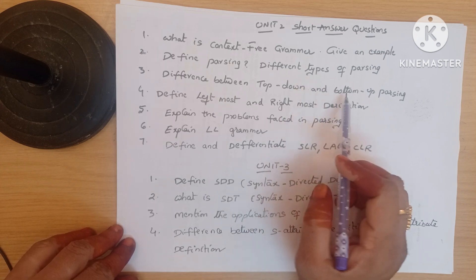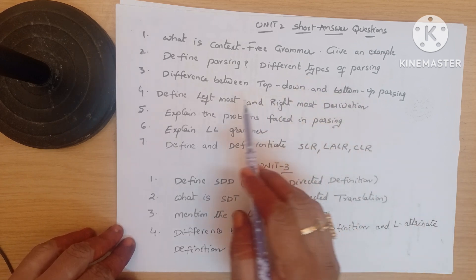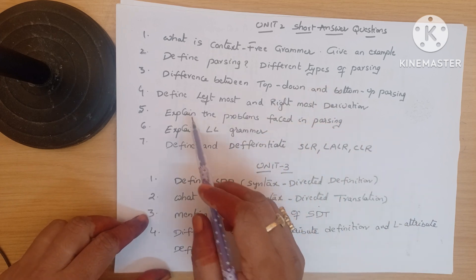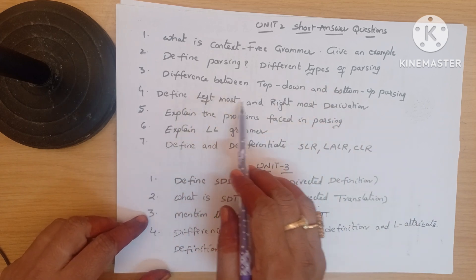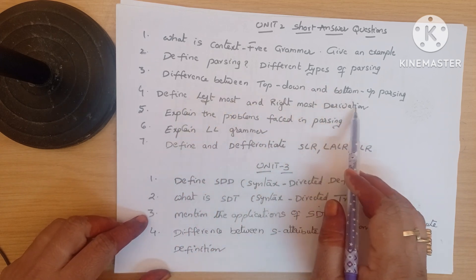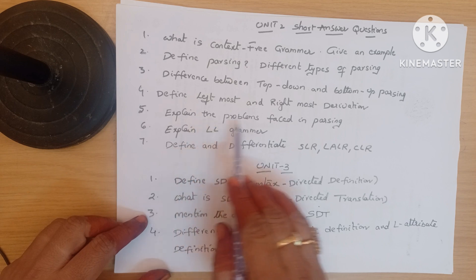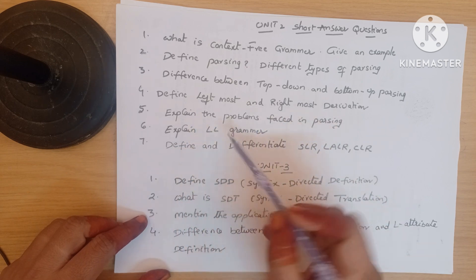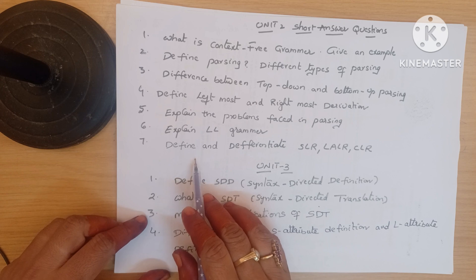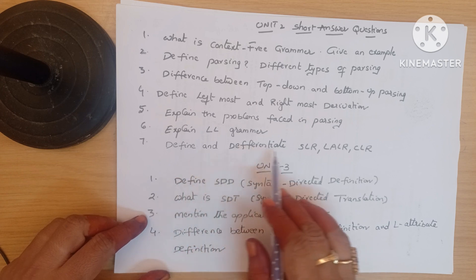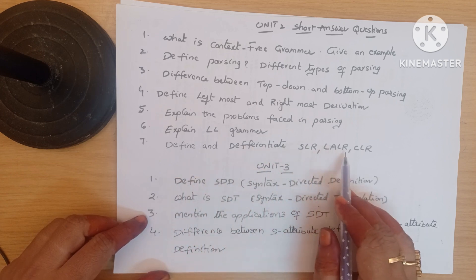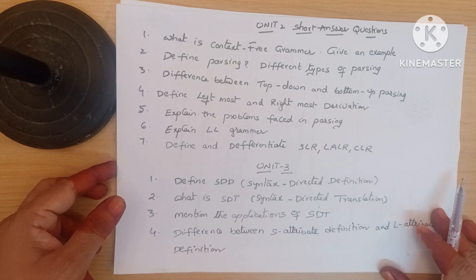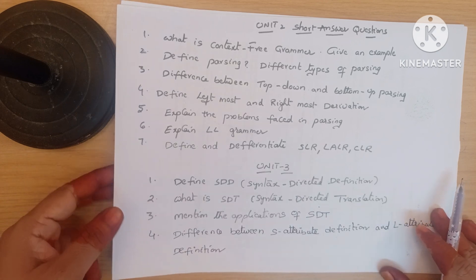Next: define leftmost and rightmost derivations. Explain the problems faced in parsing. Explain LL(1) grammar. Next: define and differentiate SLR, LALR, and CLR. These are the short answer questions in Unit 2 of Compiler Design.